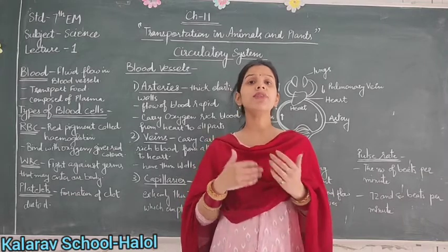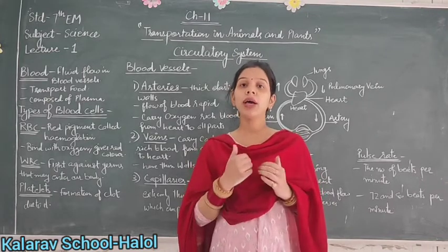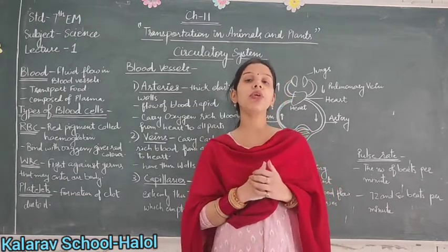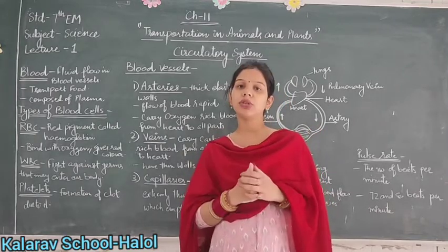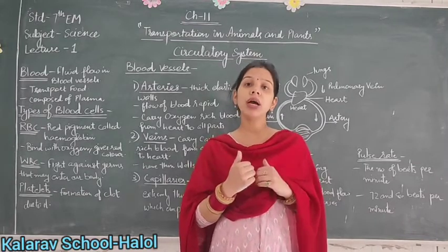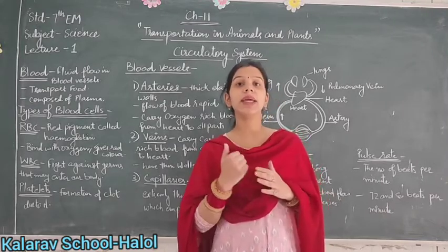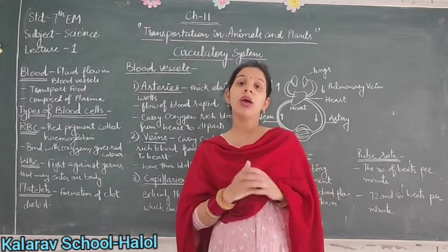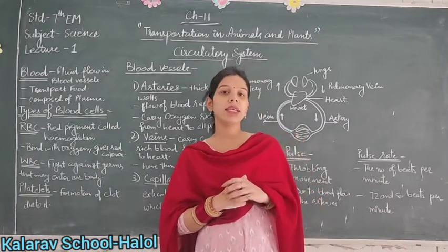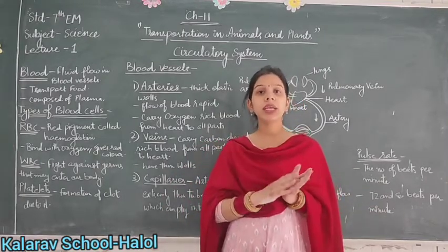What are the functions of blood? Number 1, it helps in the transport of food from the small intestine to different parts of the body. Number 2, it carries oxygen from the lungs to different parts of the body. It also collects waste material like carbon dioxide from different parts of the body and carries it to the excretory organs.